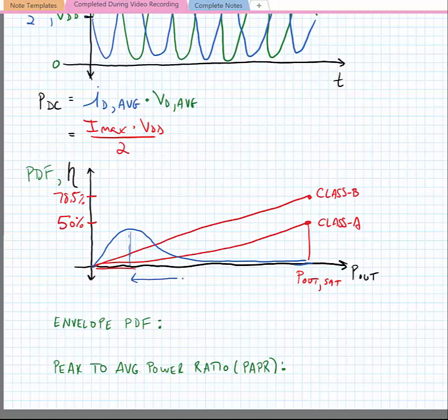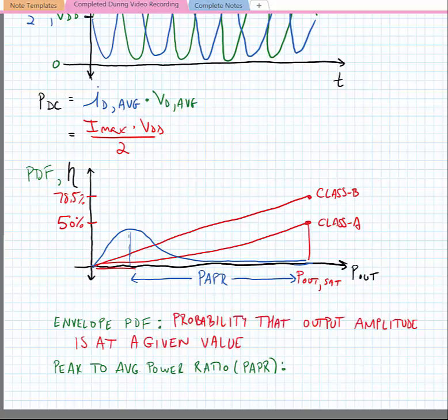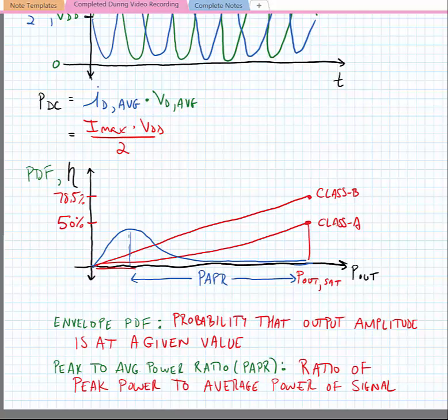When designing power amplifiers we often talk about the PAPR, or peak-to-average power ratio, which is the difference in dB between the saturated output power and the average output power. The envelope PDF is defined as the probability that the output amplitude is at a given value at any instant in time, and PAPR is the ratio of the peak power to the average power of a signal.